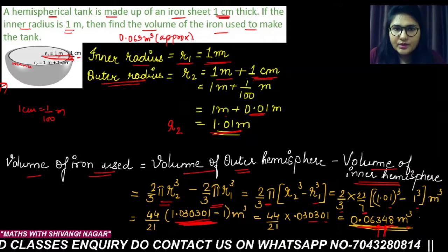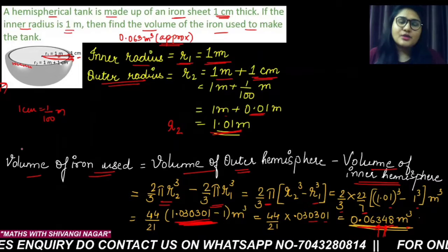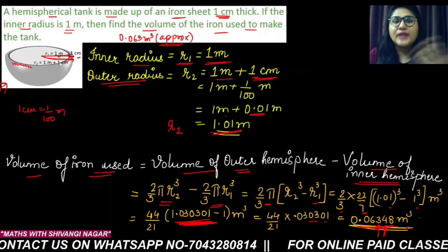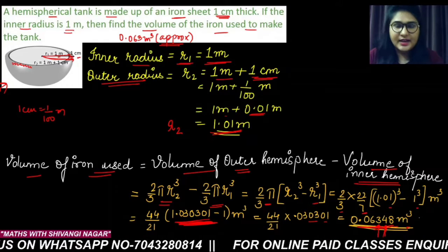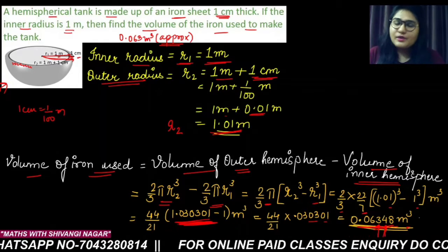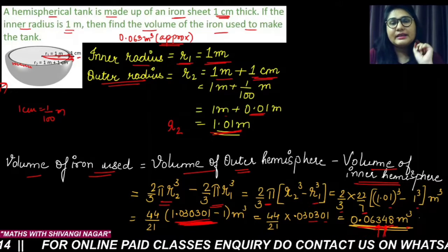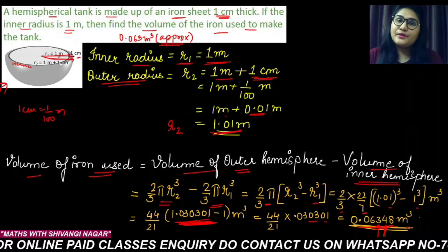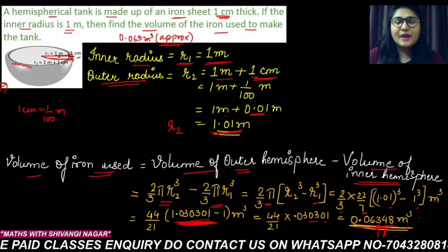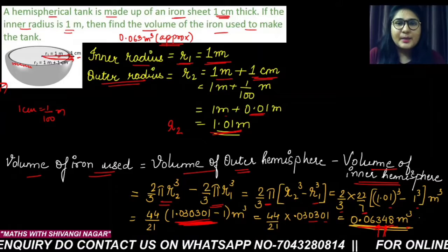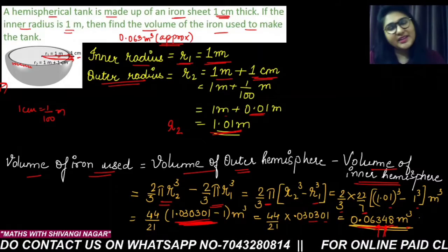So this much volume of the iron sheet we are required to form this type of hemispherical tank. So if you got the solution of this question, if you like my video, give me a thumbs up by clicking the like button. And if you are new to my channel, then please do subscribe it and press the bell icon so that you will never miss any of my updates. Till then, bye-bye, take care, see you in my next video with the next question solution.